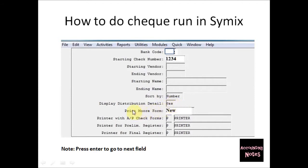Leave Display Distribution Detail at its default of Yes. For Print Form, there is an option for old dot matrix if you have that printer, or leave it as new. The next three options — Printer, Printer Paper, Printer — keep them as default. To move between fields, hit Enter each time to go down.